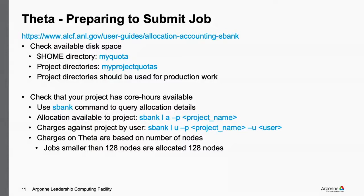Charges on Theta are based on node count — the number of nodes utilized for the job — regardless of whether you use one core or all cores on the node, so we encourage you to use all cores. Jobs submitted to the default queue that are smaller than 128 nodes will still be allocated a full set of 128 nodes, as 128 nodes is the minimum allocable unit for the scheduler. So if you submit a 32-node job for testing, it will still be allocated 128 nodes. For workflows consisting of many small jobs, it's advantageous to bundle them together to make use of the full 128 nodes.